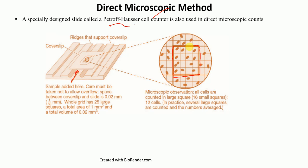This large square has 16 small squares. If we count the number of cells in this big square, we have 12 cells. So there are 12 bacteria visible in this large square.